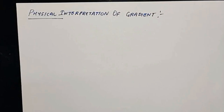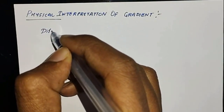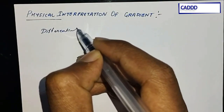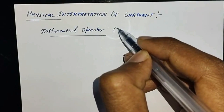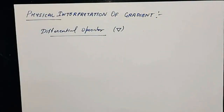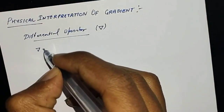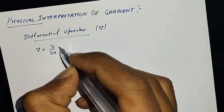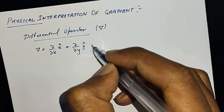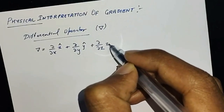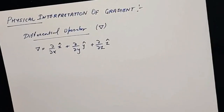When we calculate a gradient, there is a term called the differential operator, which is denoted by delta. This delta is given by: del/del-x times x-cap, plus del/del-y times y-cap, plus del/del-z times z-cap. So this is what the delta operator is, and now let's move to the gradient.